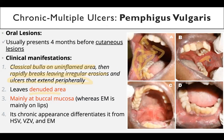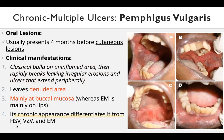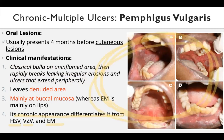The lesion extends from the center outward, leaving a denuded, eroded area — central erosion with peripheral extension. Its chronic appearance differentiates it from herpes simplex, varicella zoster, and erythema multiforme. This can also appear on the buccinator area, the internal cheek mucosa, as one of the oral manifestations, presenting as yellow and shallow ulcers.